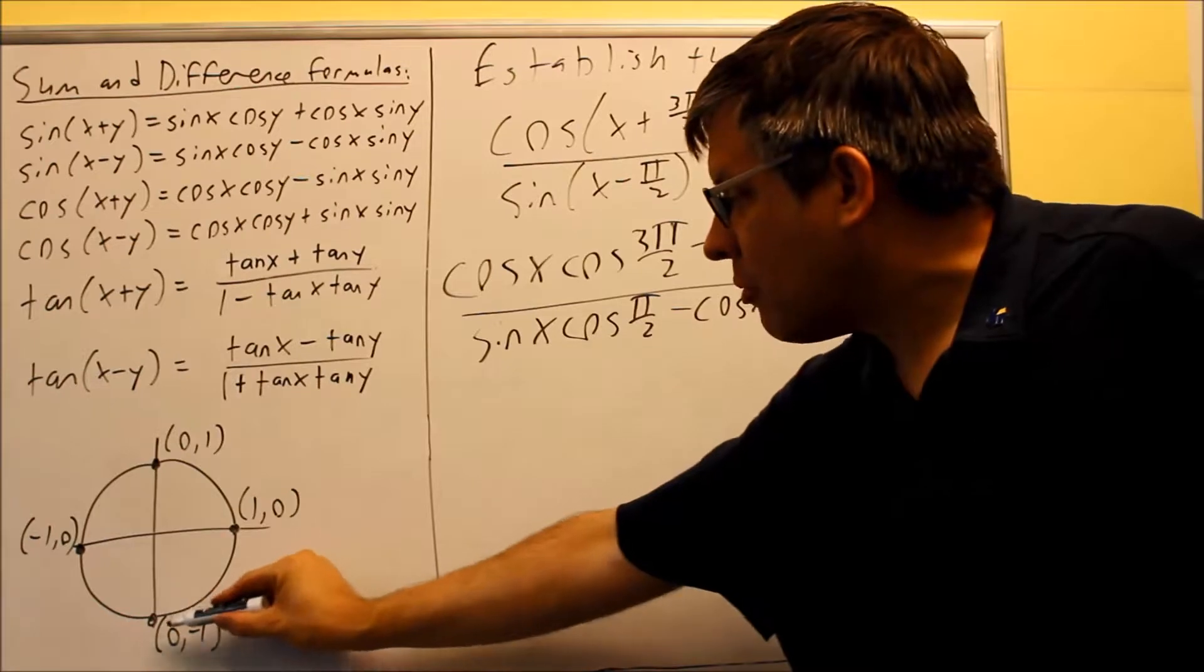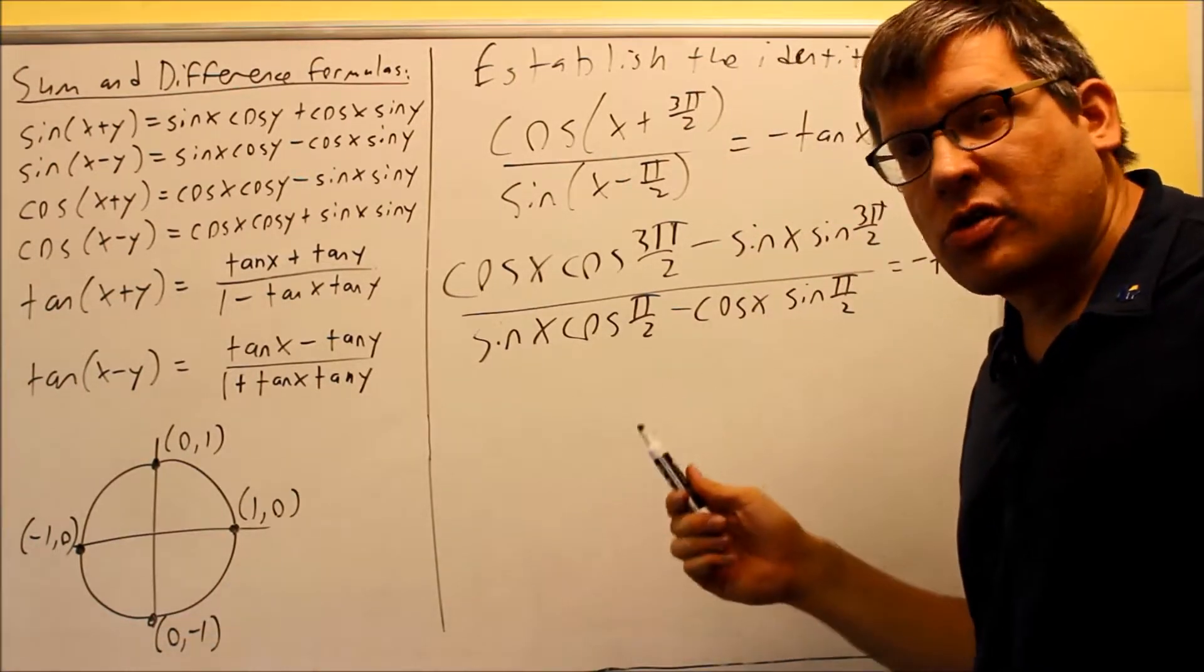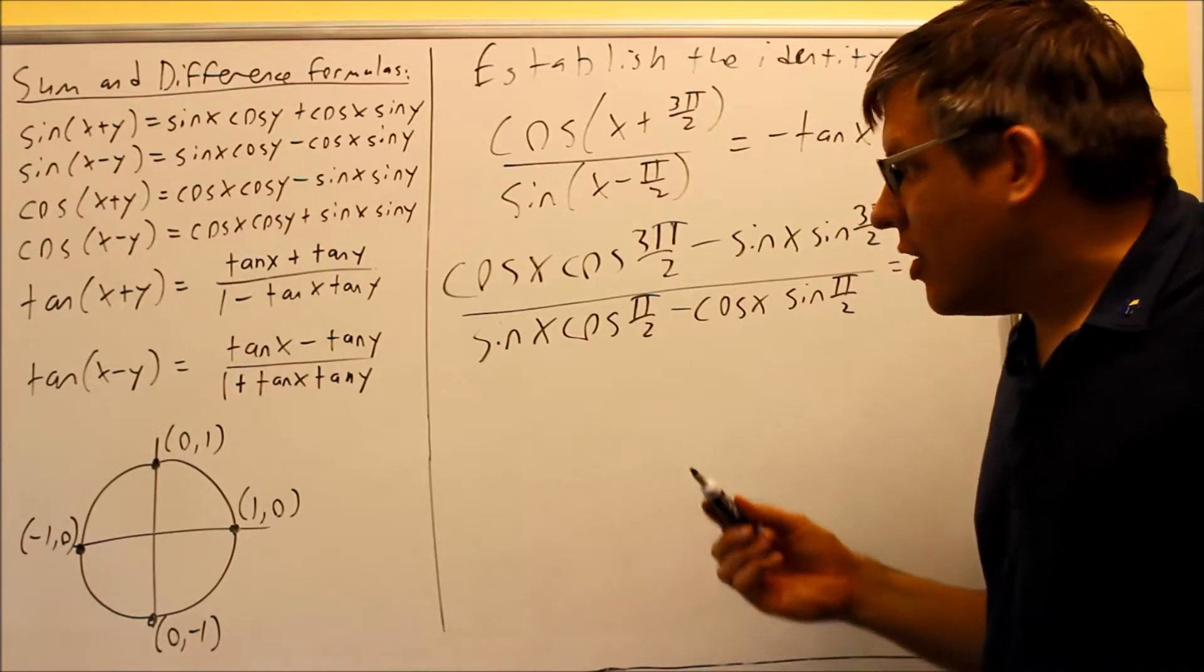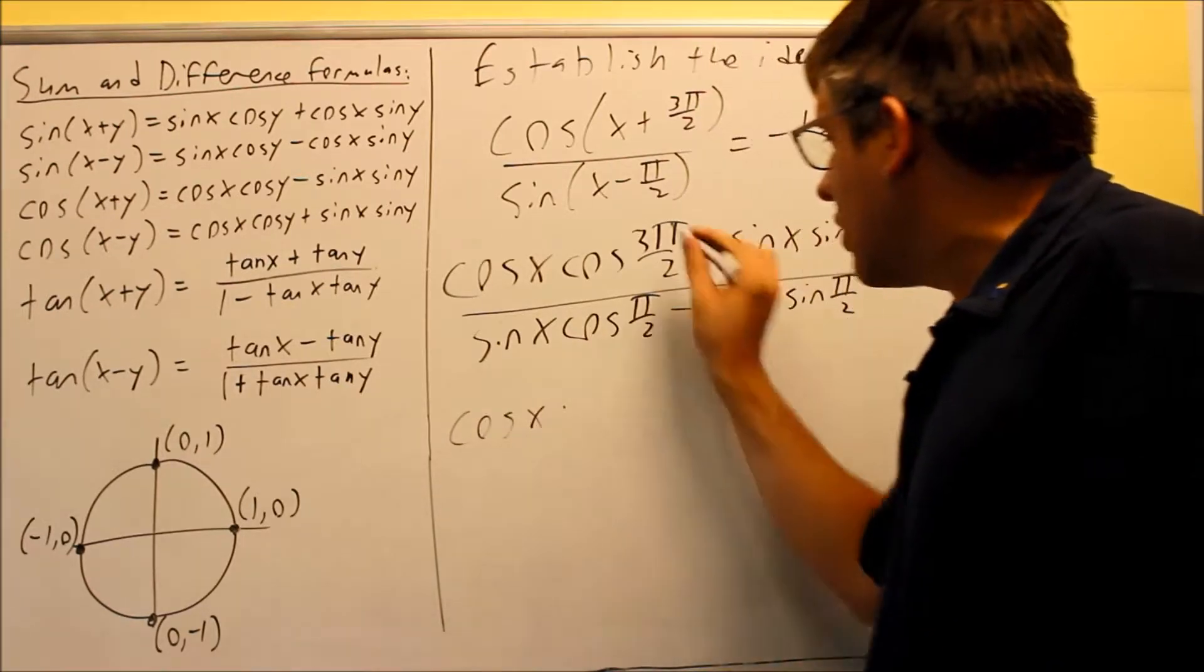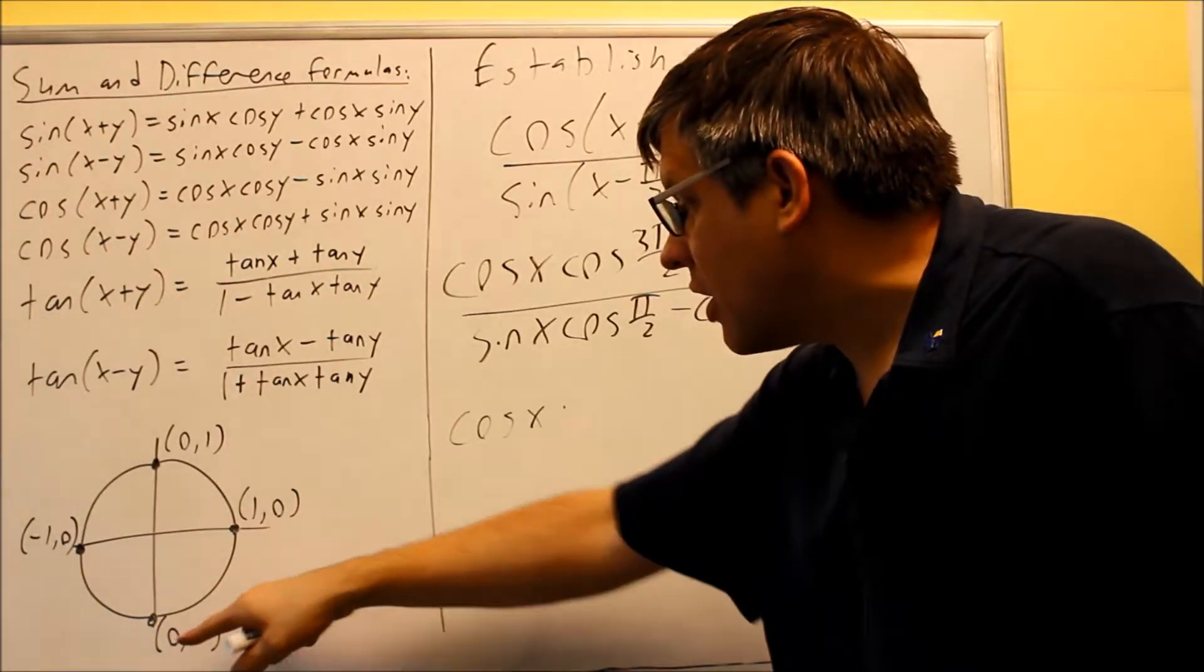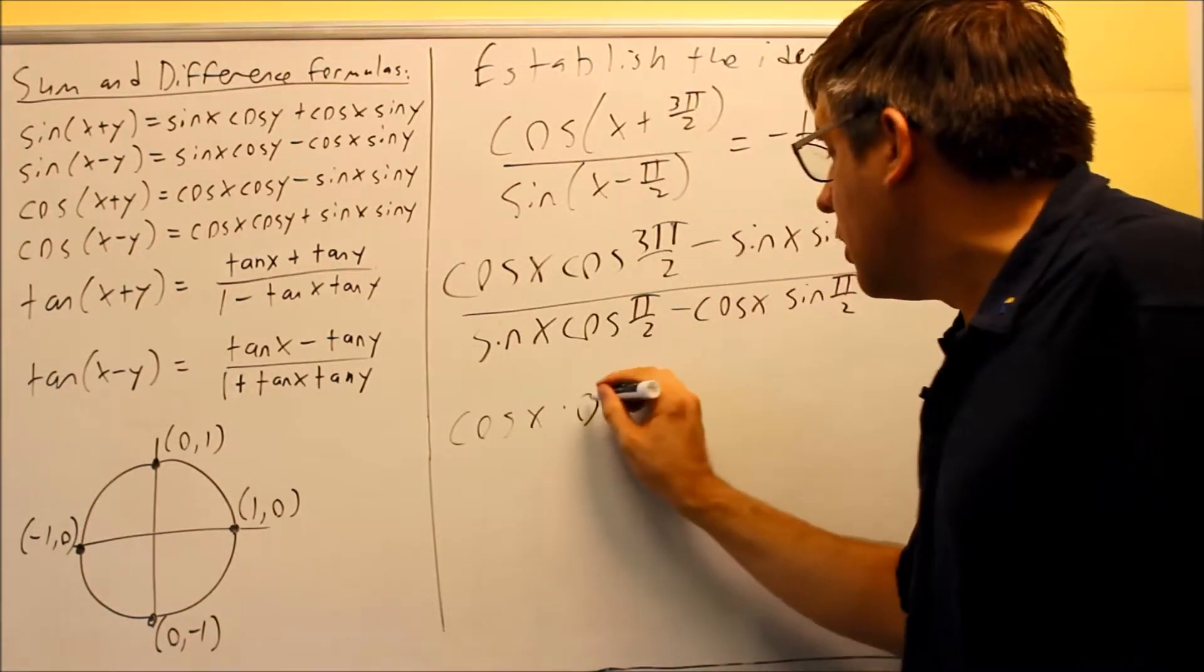The 3π over 2 value is down below here. We mentioned before that cosine is the x value and sine is the y value. So I can rewrite this. I can do cosine x and then cosine 3π over 2, that's the x value at 3π over 2. That's down here. That would be a 0 in this case.